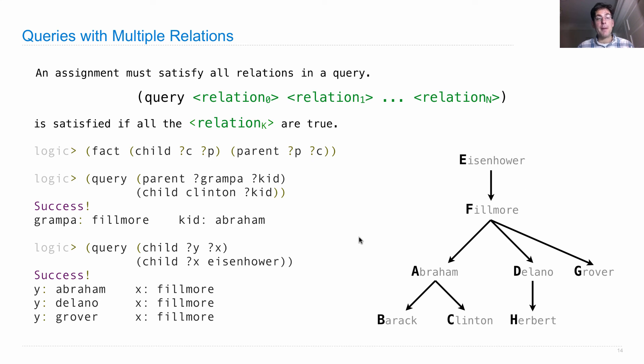Compound queries are different from compound facts, in that every relation within the compound query has the same role. We just and all of these together. They all must be true at the same time. Whereas in a compound fact, the first one was special. That was the conclusion, and the rest were hypotheses. There were things that should already be true in order to verify the conclusion.